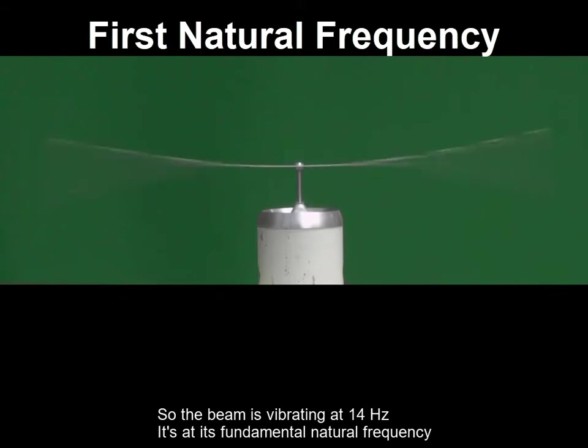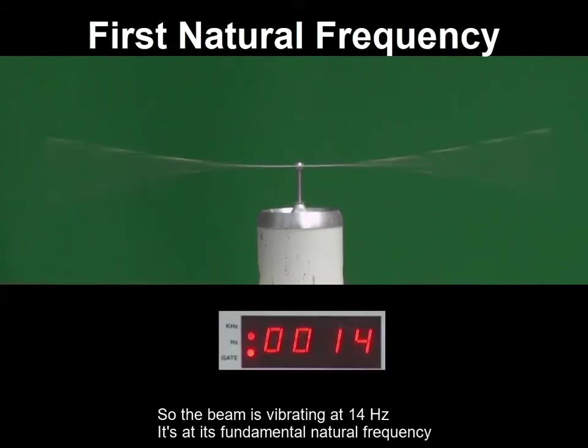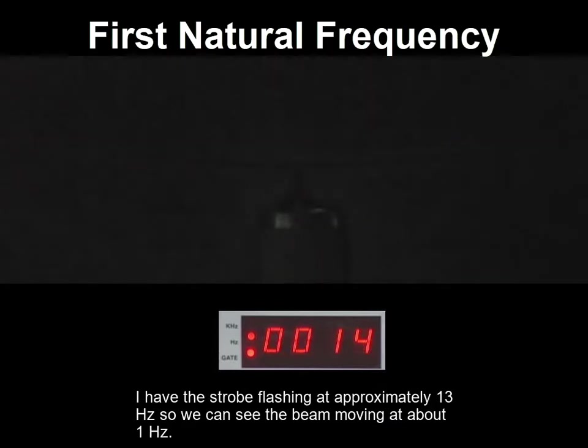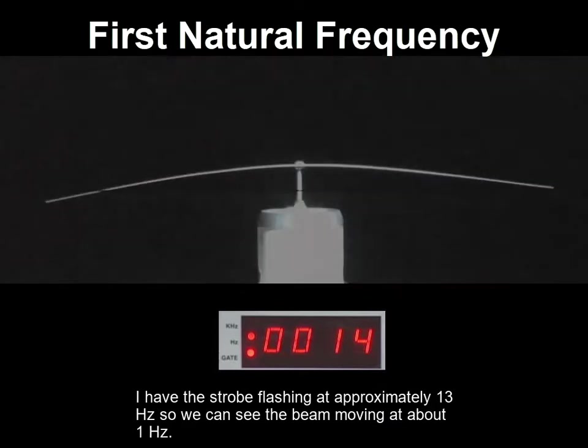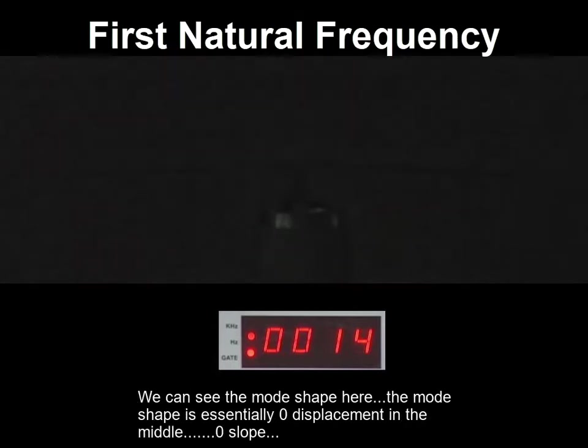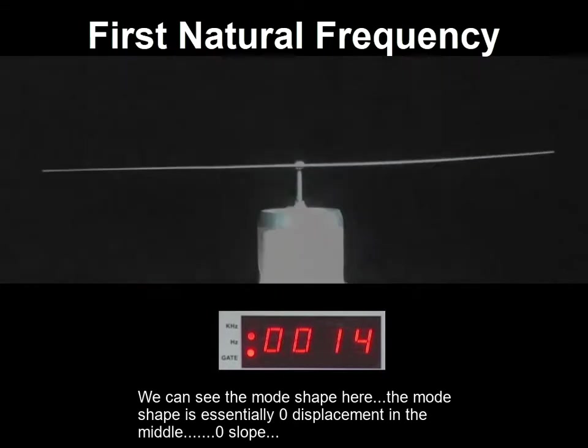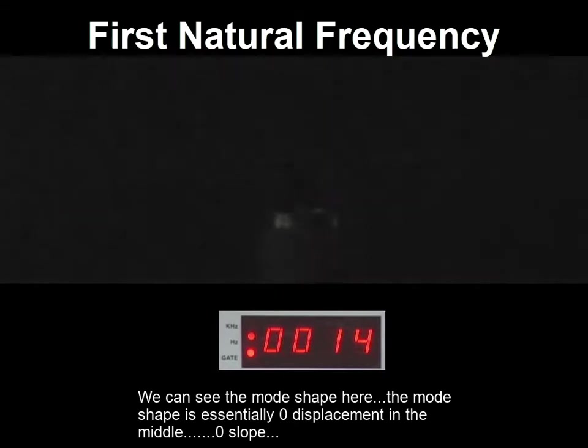So the beam is vibrating at 14 Hz. It's at its fundamental natural frequency. I have the strobe flashing at approximately 13 Hz so we can see the beam moving at about 1 Hz. We can see the mode shape here. The mode shape is essentially zero displacement in the middle, zero slope.